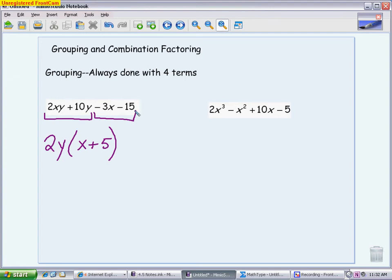Then you're going to do the same thing with the second two terms. And the goal is the stuff that's left, the stuff in parentheses, should be the same as what was in parentheses in the first piece. So this time, they're both divisible by 3. Now, because this is a negative, I actually want to take out a negative along with a 3. So I'm going to take out a negative 3. When I do that, I'm left with x plus 5.